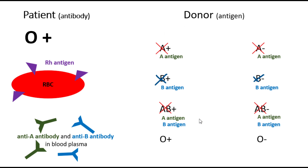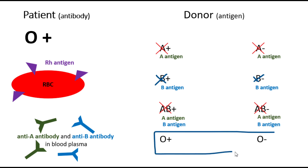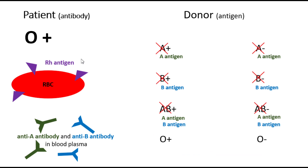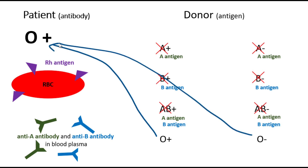So after eliminating six of these eight groups of donors, we are left with the only donors that our patient can accept blood from. In general, if your patient has O positive blood type, the patient accepts O positive and O negative, both of them.